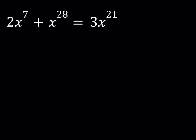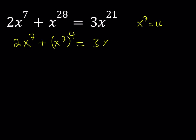Notice that all the powers here are multiples of 7. So what I can do here is basically a basic substitution where I can replace x to the 7th with u. So if I go ahead and arrange my polynomial in that way, I can write it like 2x to the 7th plus x to the 7th to the 4th equals x to the 7th to the 3rd power. And then I'm going to replace x to the 7th with u. So this should give me 2u, u to the 4th, and then 3u cubed.